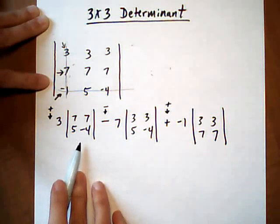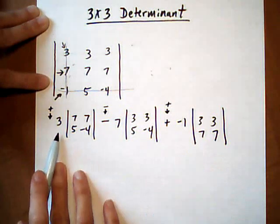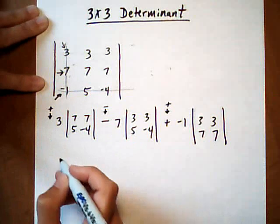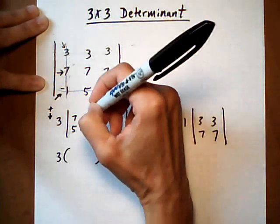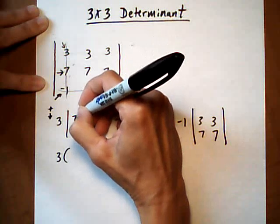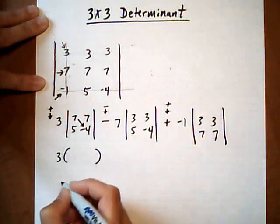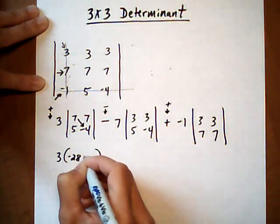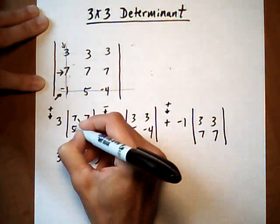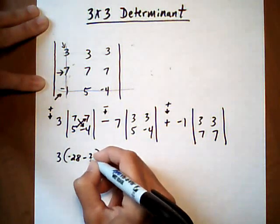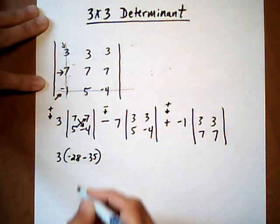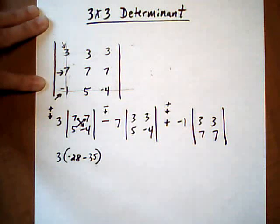Now we have to evaluate the 2 by 2 determinants and multiply them by their outside number. So we get 3 times, and multiplying out a 2 by 2, you always go from top left to bottom right and multiply, negative 28, take away bottom left to top right, 35. Alright, so you're subtracting the cross multiplies, always starting with that position right there.